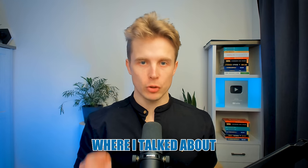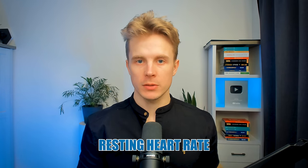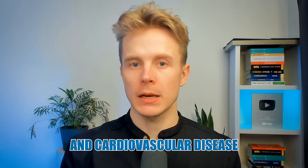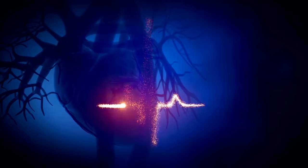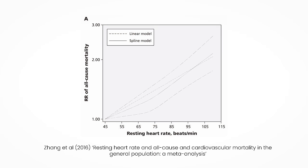Last week, I published a video where I talked about how the average person's resting heart rate is already in the category of increased risk of all-cause mortality and cardiovascular disease mortality. The average person's resting heart rate is between 60 and 100, and in a 2016 meta-analysis of 1.2 million people, every 10-beat increase beyond 45 beats per minute was linked to a 9% higher relative risk of all-cause mortality and 8% higher relative risk of cardiovascular disease mortality.